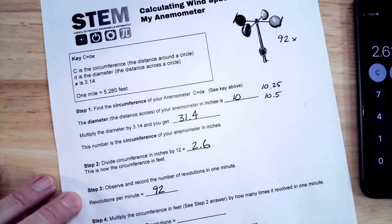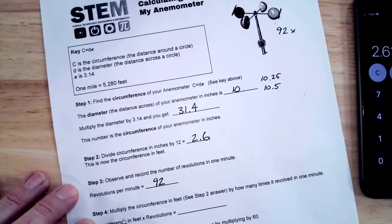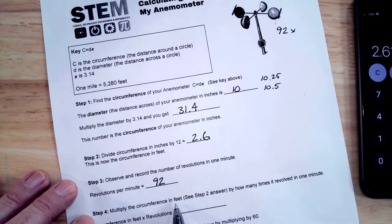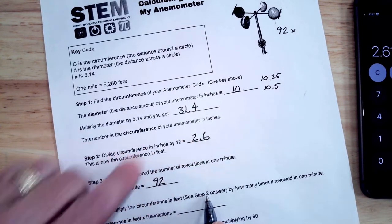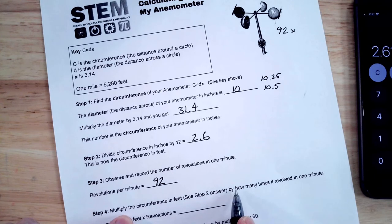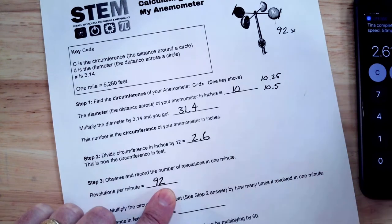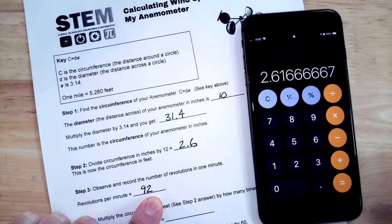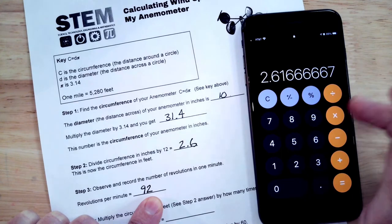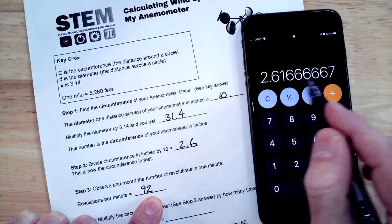Now we're going to multiply the circumference in feet, that's just the step 2 answer right here, so multiply the circumference in feet by how many times it revolved in one minute. So that's this number times this number, and we already have this number in here, so I guess we could zero that up, but it's okay.